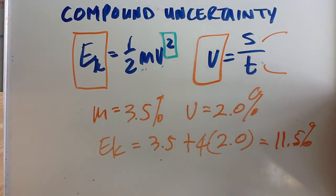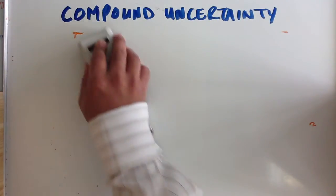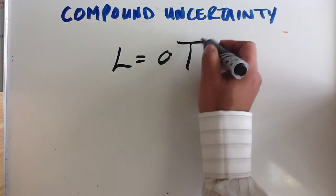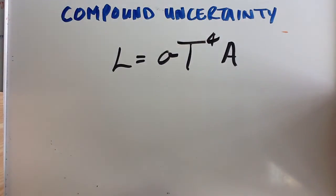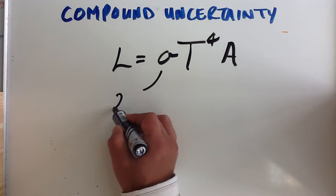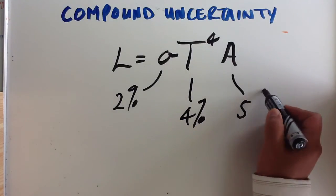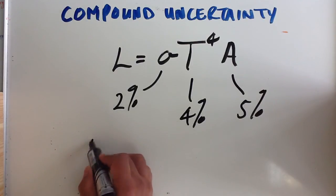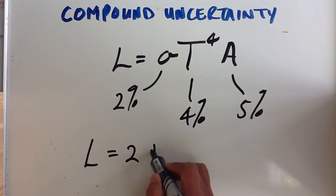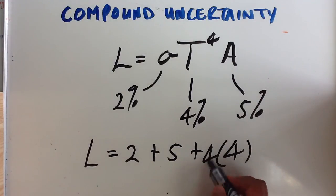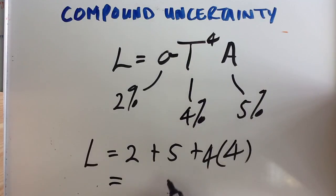I'll give you another example. This is an example of Stefan Boltzmann law, L = σT^4A. So let's say that has a percentage uncertainty of 2%, that has a percentage uncertainty of 4%, and that one has a percentage uncertainty of 5%. What we would then do is say, the uncertainty is 2 plus 5 plus 4. And because that 4 is to the power of 4, we multiply that by 4, and so we will get an answer of 16, and that's 23%. So here the percentage uncertainty is 23%.